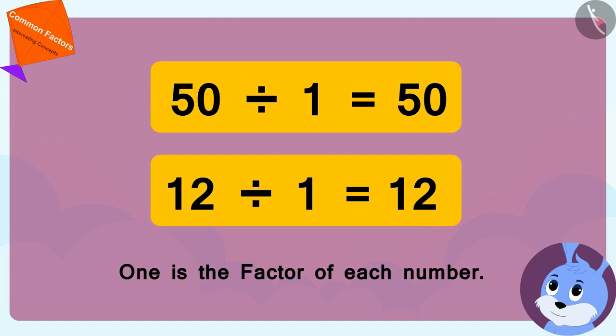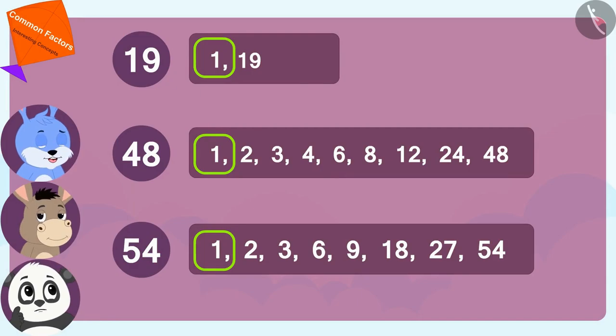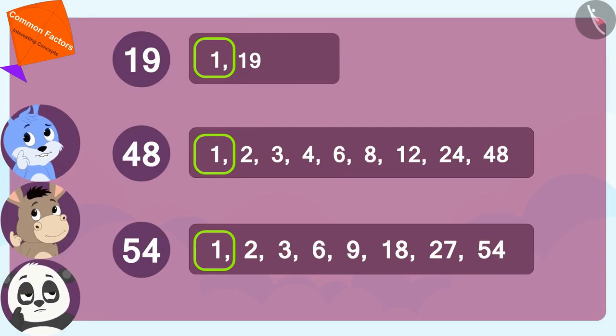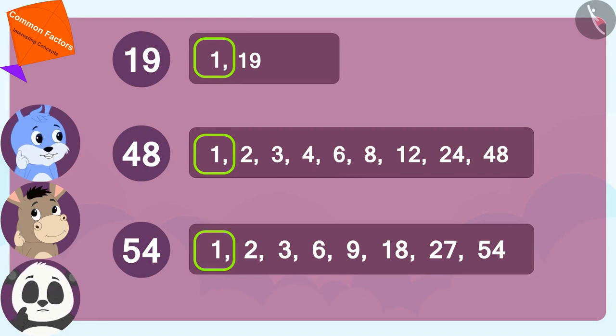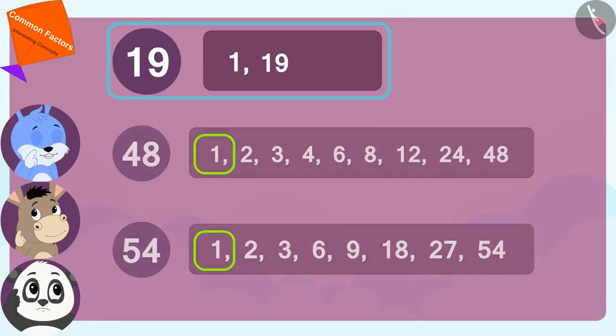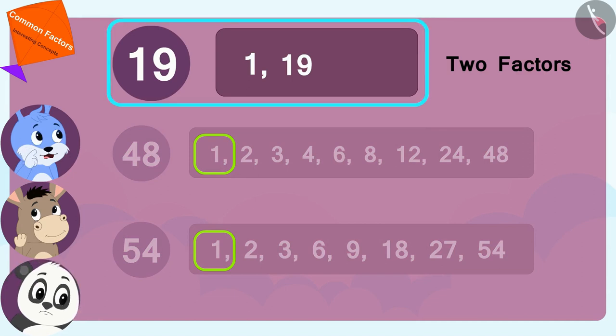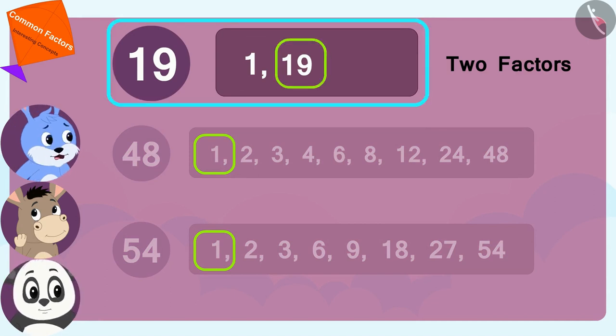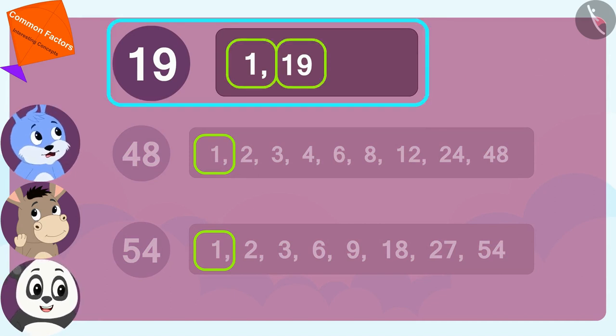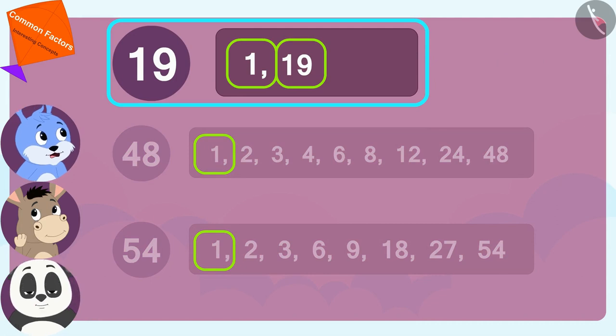Now all three friends are thinking that they cannot give all those things to only one child. And 19 has only two factors: one and 19 itself. So those numbers and shared factors are not possible.